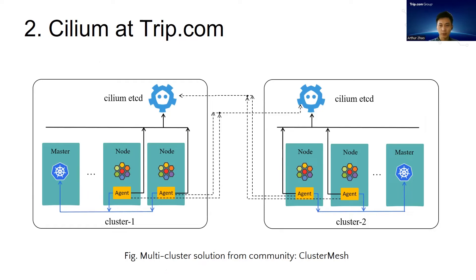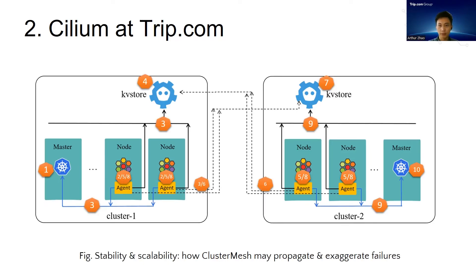Now let's look at the multi-cluster problem. For historical reasons, our business is deployed across different data centers and Kubernetes clusters, so there are inter-cluster communications without layer 4 or layer 3 border gateways. This is a problem for access control, as identity is a cluster-scoped object. The community solution is Cluster Mesh, which requires every single agent to connect to every etcd in all clusters, effectively resulting in a peer-to-peer mesh. While this solution is straightforward, it suffers stability and scalability issues, especially for large clusters. When a single cluster goes down, the failure would soon propagate to all other clusters in the mesh, and eventually all clusters may crash at the same time — because clusters in Cluster Mesh are so tightly coupled.